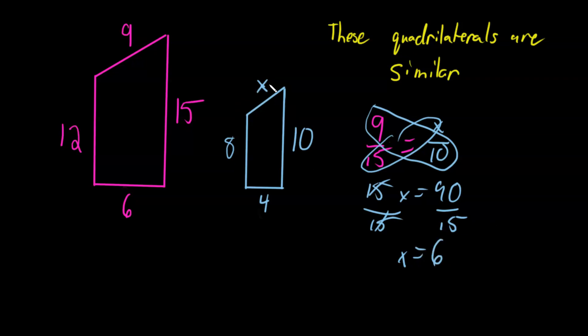So up top, x is equal to 6. That is one way of doing it. Another way of doing it is...